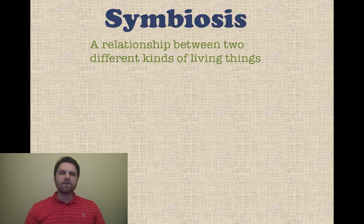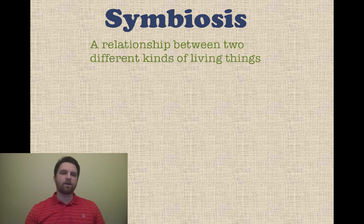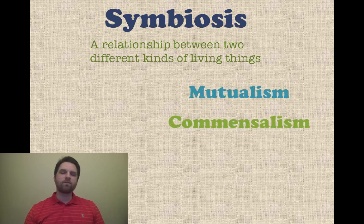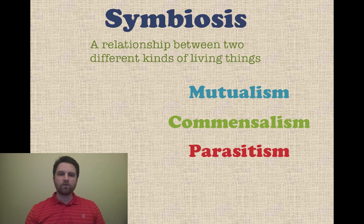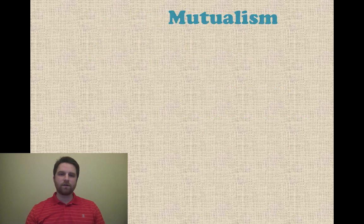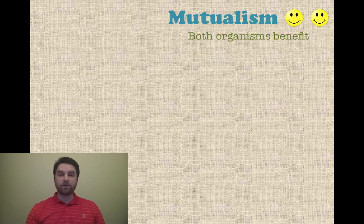Now let's look at the three different types of symbiosis. Symbiosis is a relationship between two different kinds of living things, not the same living thing. We're going to have mutualism, commensalism, and parasitism, and see what the relationship is like and who benefits. First, let's start with mutualism, which is where both organisms actually benefit from the relationship.